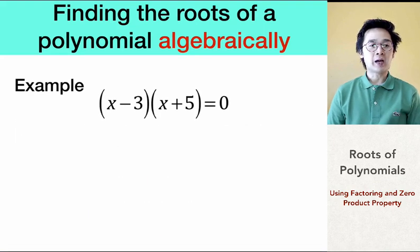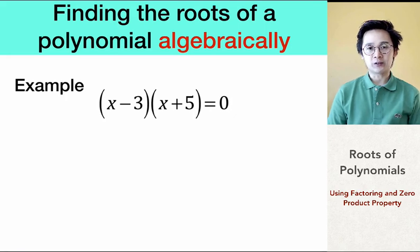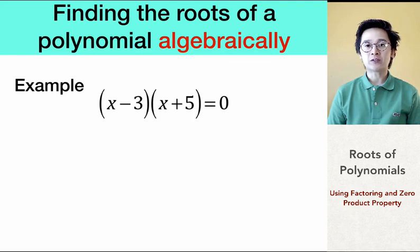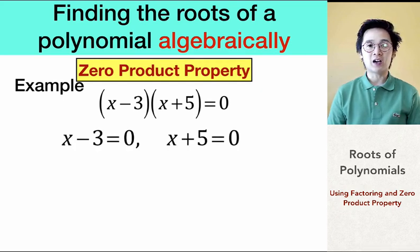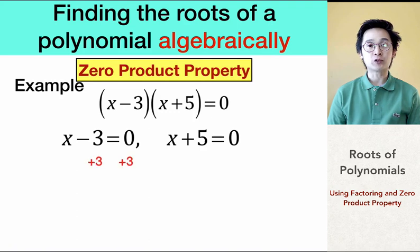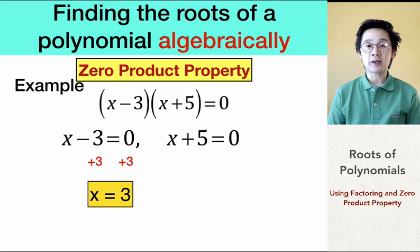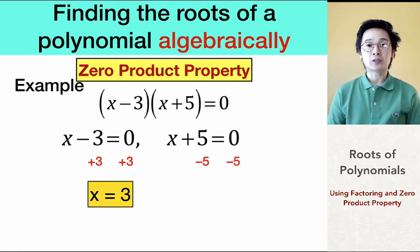In this example, we have (x − 3)(x + 5) = 0. This polynomial is in factored form, so we use the zero product property. Setting x − 3 = 0 and adding 3 to both sides gives x = 3. For the second factor, subtracting 5 from both sides of x + 5 = 0 gives x = negative 5.